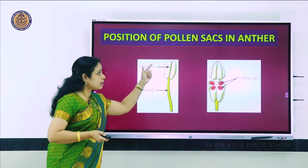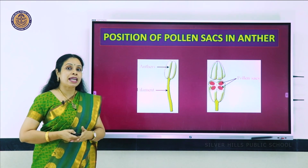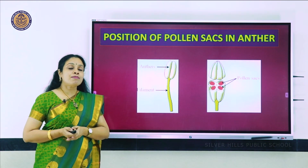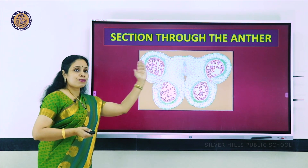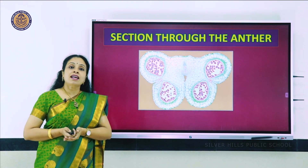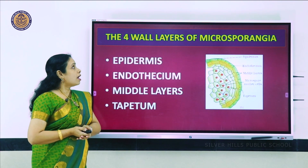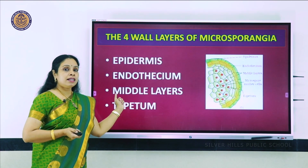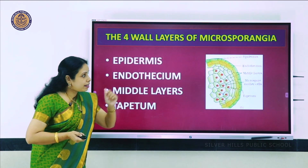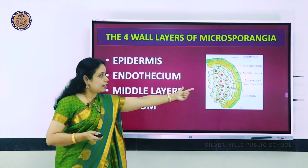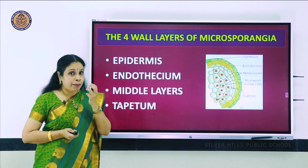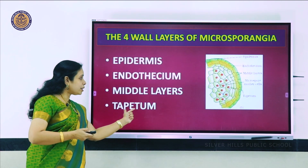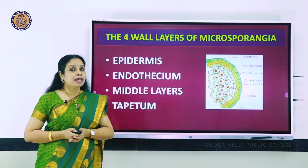These are the anthers - the anther and the filament make up the androecium or male part. If you cut a section of the anther, you will find the pollen sacs. In transverse section, the red areas are where the pollen grains are developing. The anther will have four wall layers: epidermis, endothecium, middle layers, and tapetum. The innermost layer, the tapetum, gives nourishment to the developing pollen grains.